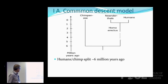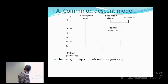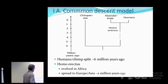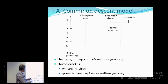In the common descent model, the human and chimpanzee lineages split around 6 million years ago — this estimate varies somewhat. Then along the human lineage, Homo erectus evolved in Africa and spread to other continents — from Africa to Europe, Asia, and other continents — about 2 million years ago. That lineage then split about 500,000 years ago into Neanderthals and anatomically modern humans, among others. That is the general structure.